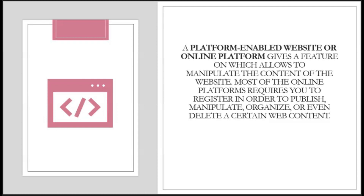From the items you presented in the previous activity, it shows that a website is a tool for information and entertainment. However, there are websites that offer more than just reading articles or listening to music. These are what we call platform-enabled websites. An online platform gives a feature that allows you to manipulate the content of the website. Most online platforms require you to register in order to publish, manipulate, organize, or even delete certain web content. As a senior high school student, you are expected to know the different online platforms.